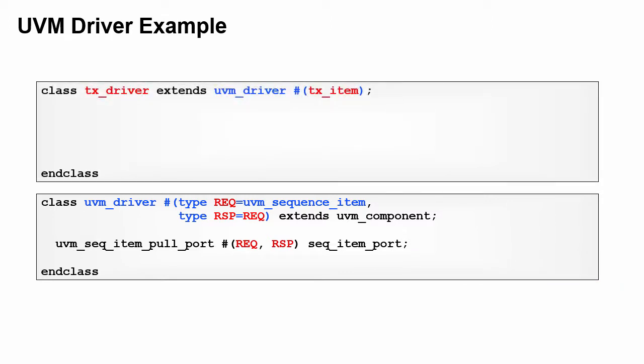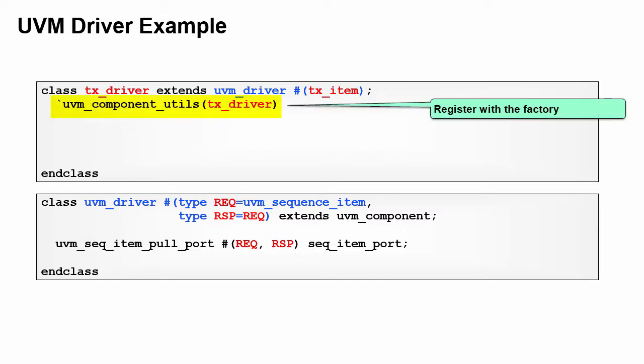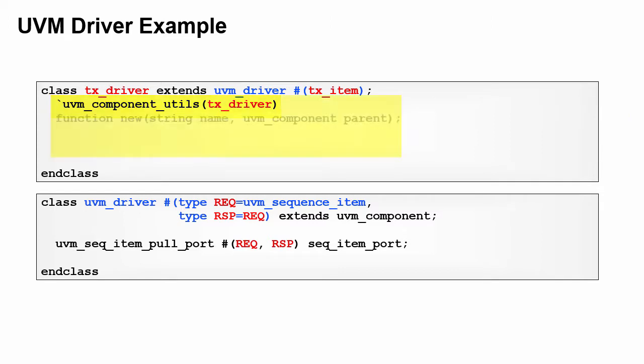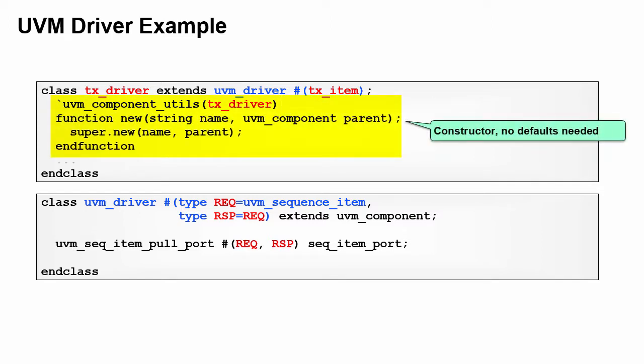The TX driver class extends UVM driver and specializes it with the TX item type. Since there's just one type, the response type defaults to TX item. Since TX driver is a component, you need to register it with the UVM factory. Notice the macro is UVM component utils. The constructor has two formal arguments, the instance name and a handle to the parent. You do not need default values for these, unlike a sequence item. These four lines are similar for most components, so future code examples will just leave them out.